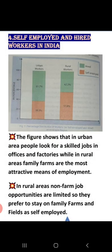Next is self-employed and hired workers. Here is a graph to give you proper information regarding self-employed and hired workers in India. This figure shows that in urban areas people have skilled jobs in offices and factories. In the graph, green represents hired workers and orange represents self-employed workers. In urban areas, hired workers are more.